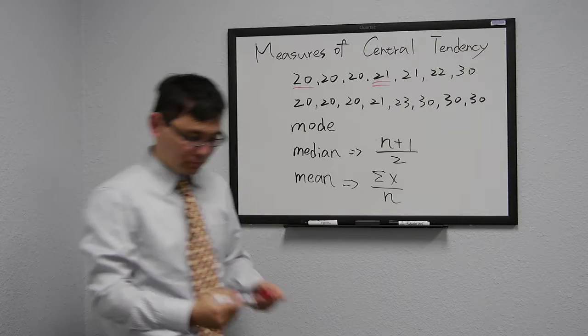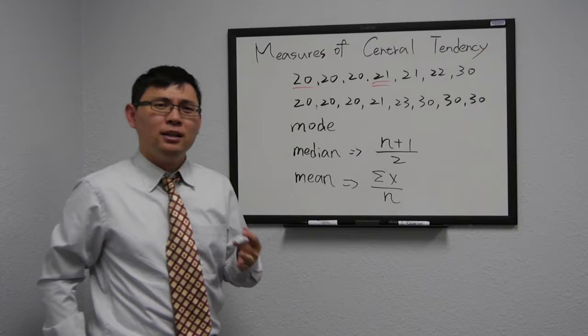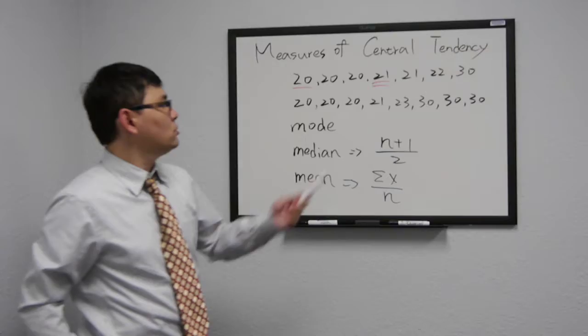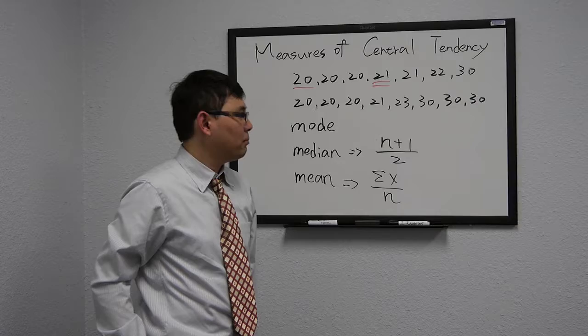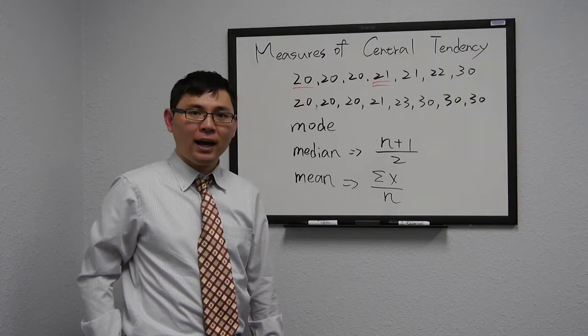What if the number of cases is an even number? In our second group of numbers, we have 8 cases. So we use this formula. 8 plus 1 divided by 2 equals 4.5.